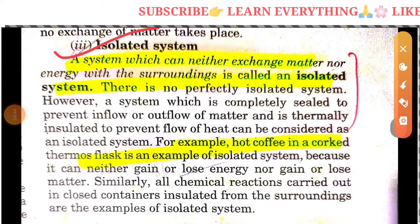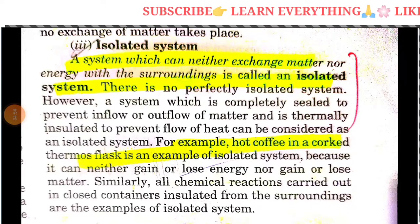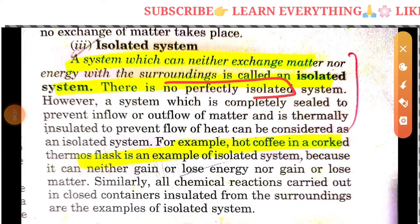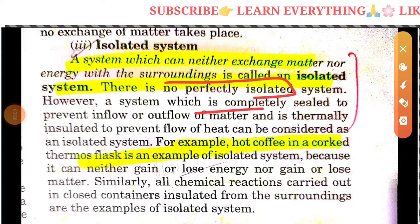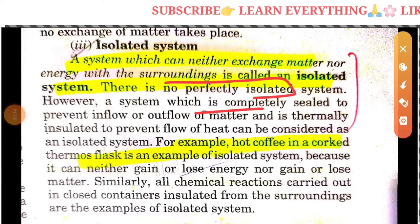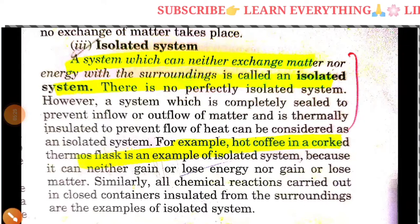An isolated system is one that has neither matter exchange nor energy exchange with the surroundings. There is no perfectly isolated system; however, a system which is completely sealed to prevent inflow or outflow of matter and is thermally insulated approximates one. A thermos flask is an example — there is no matter gain or loss and no energy loss.